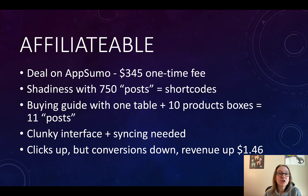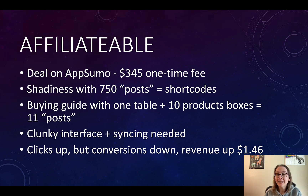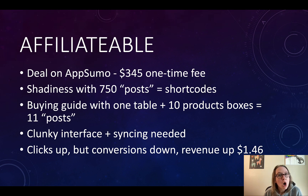I came to learn that they don't really mean "post" when they say post. What they mean is actually the number of shortcodes that you use. So for example, if I have a buying guide with a table at the top and 10 individual product reviews below that — each with a single product box — that would be 11 different shortcodes from Affiliate Table on that single post, counting as 11 posts. With as many sites as I have, there was no way that this 750-post limit was going to work for me.